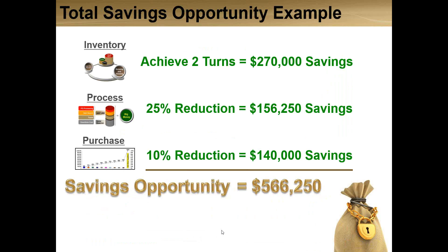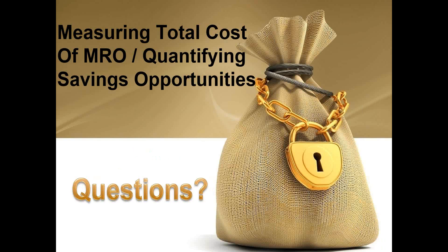Just to wrap it up: the three areas we talked about today — inventory, process, and purchasing costs. You'll want to plug your particular numbers into the scenarios we talked about, but in a very typical scenario, there's a potential of over a half a million dollars worth of savings opportunity when you lump the inventory, process, and purchasing savings opportunities together. This is a great way to bring documented, quantifiable savings opportunity to your executive committee to get some funds to make those improvements.